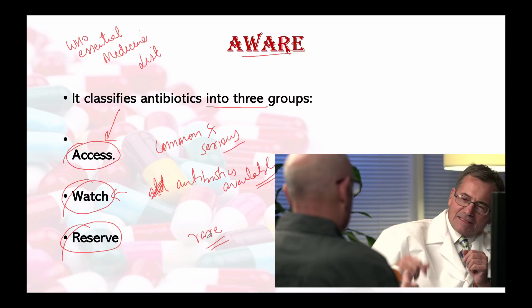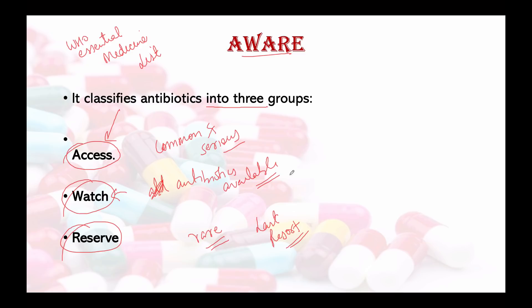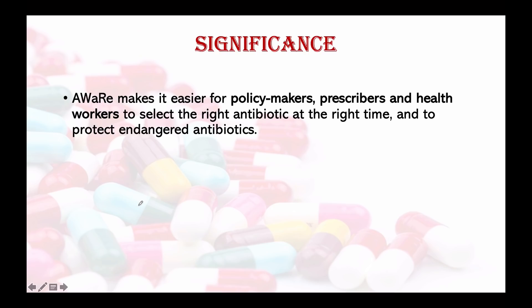At home, when we fall sick, we often go directly to the chemist and take a very strong antibiotic from the Reserve category. If we don't get better with that medicine, we have no stronger option left. That's why doctors give a light medicine first, and if it doesn't work, they switch to a stronger category. But people often take the strongest medicine first, which is counterproductive.